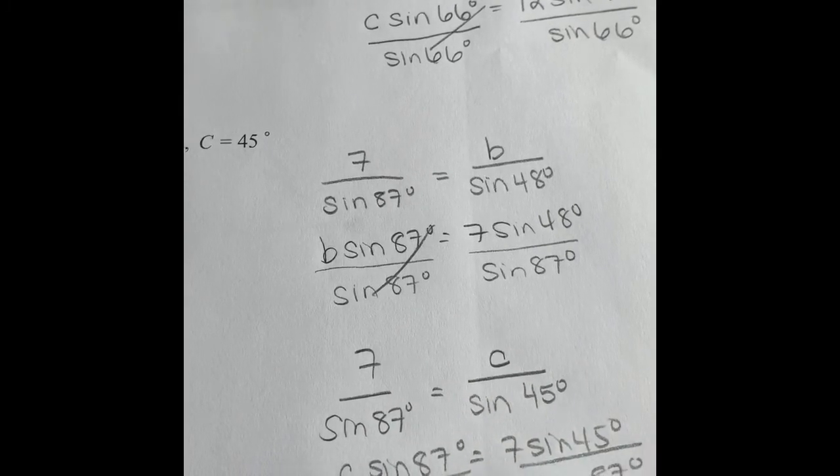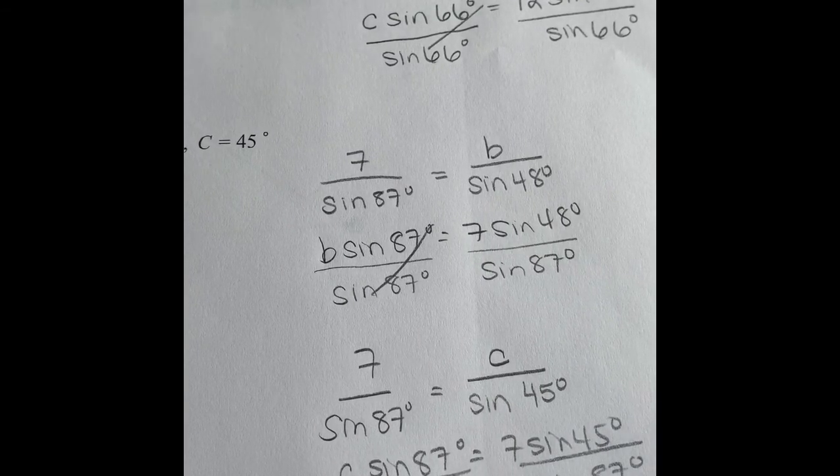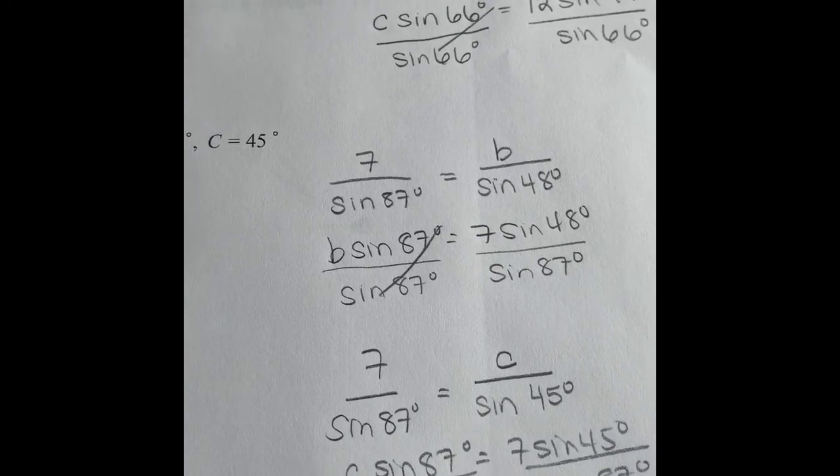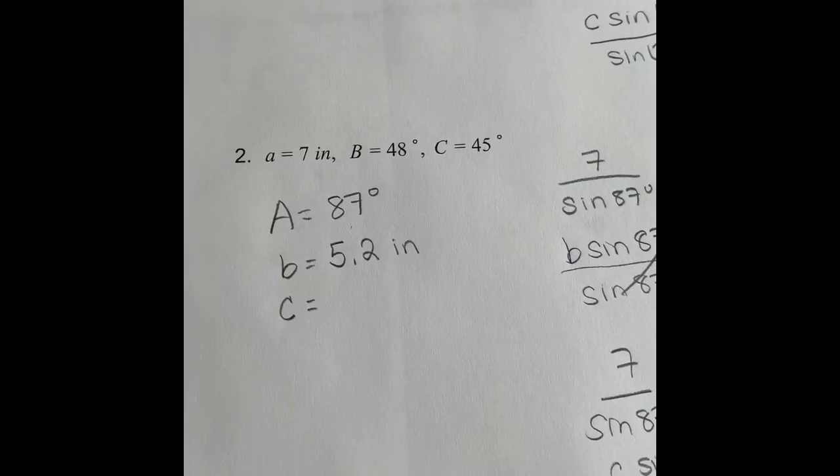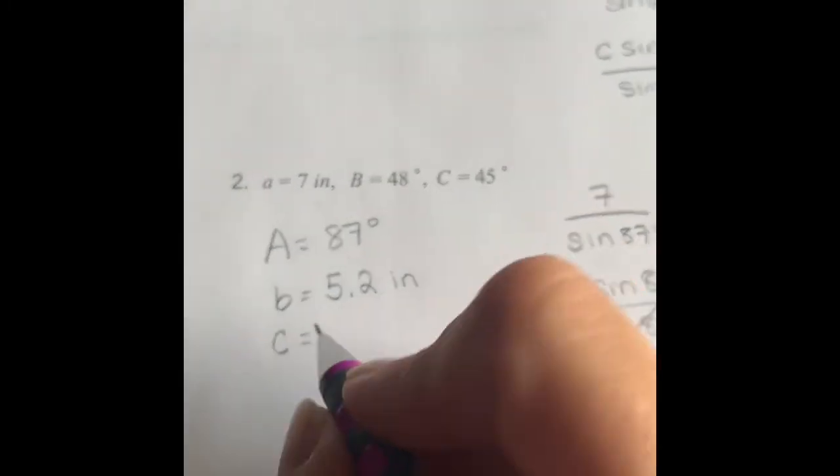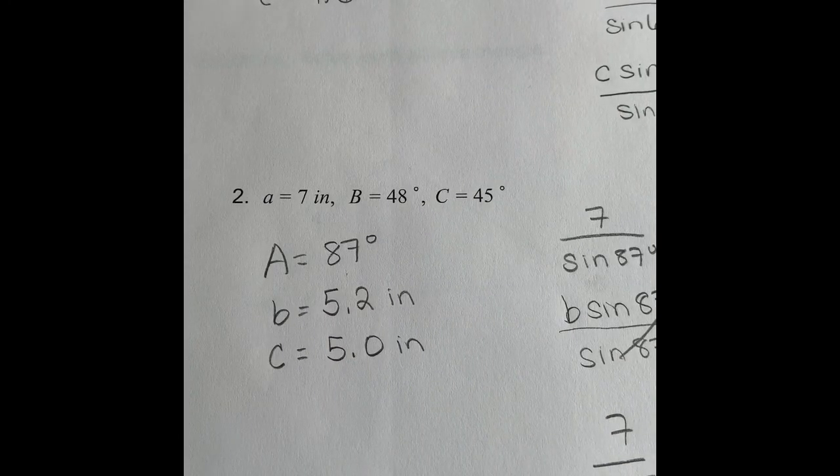So in your calculator, 7 times the sine of 45. That answer divided by the sine of 87 degrees. It gives us 4.956. So that 9 will round the 4 up to 5. Still write it with 10, so 5.0 inches. And now you have your answers for that one. Again, it was just a coincidence that we were finding the same things on both sides. But regardless of what you're trying to find, you would set these up the exact same way.